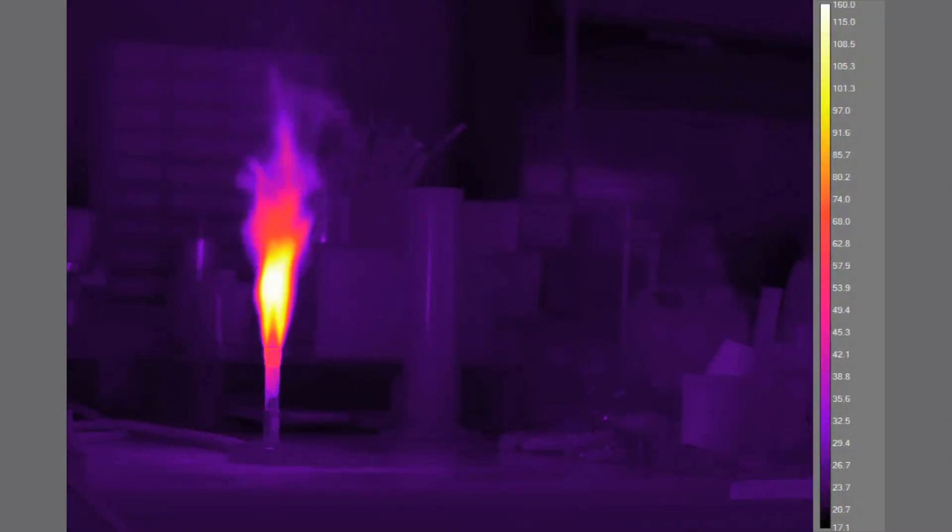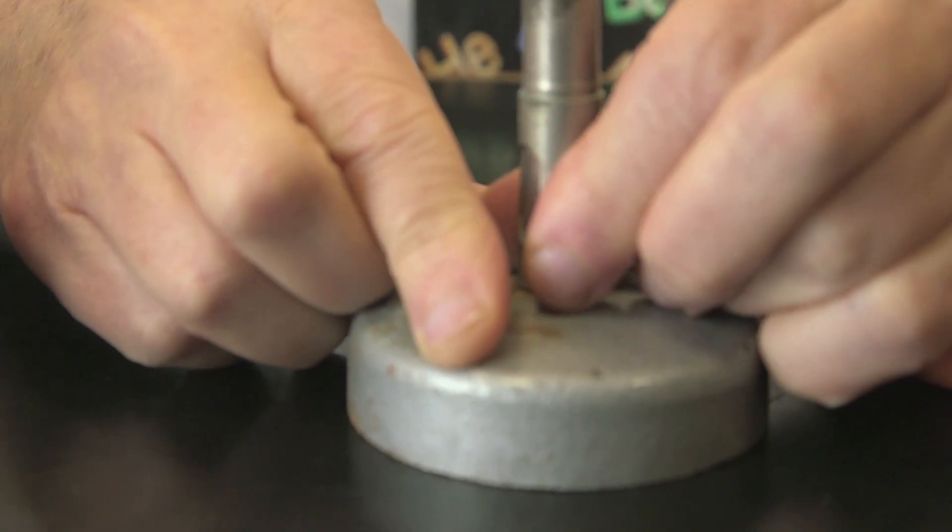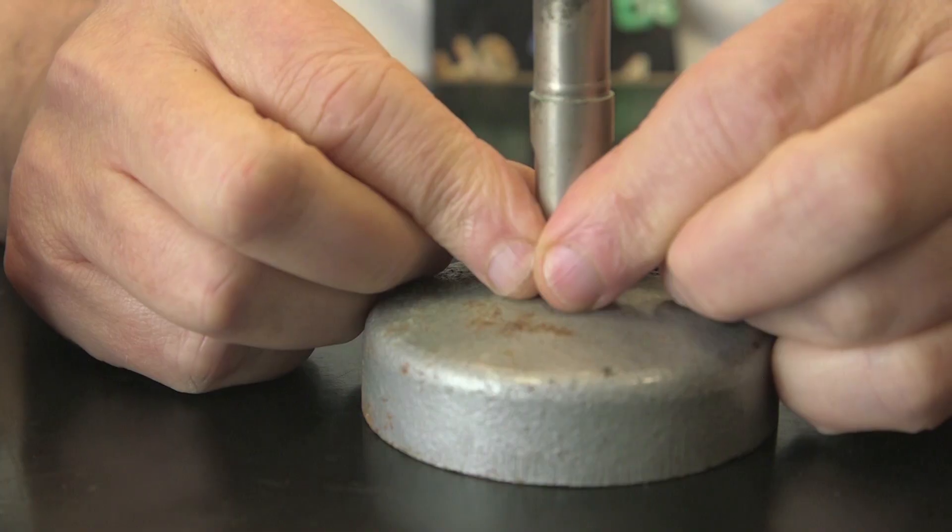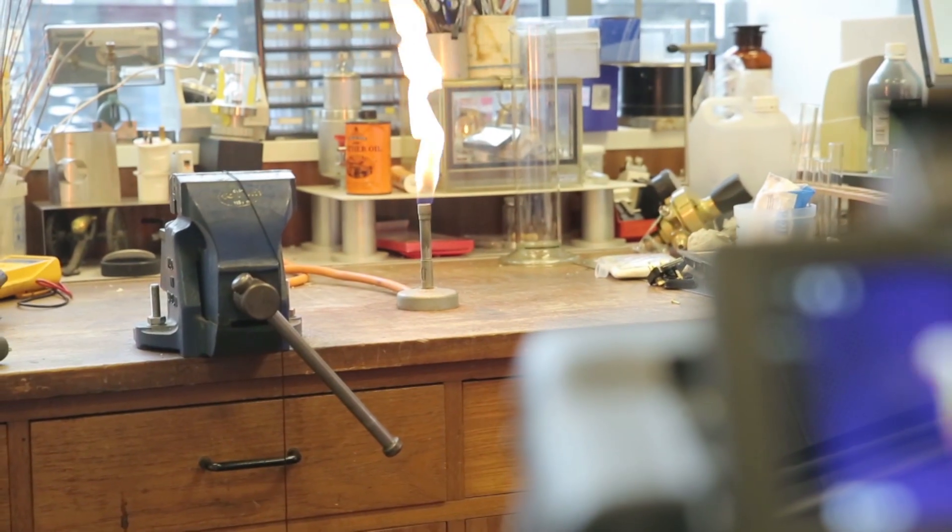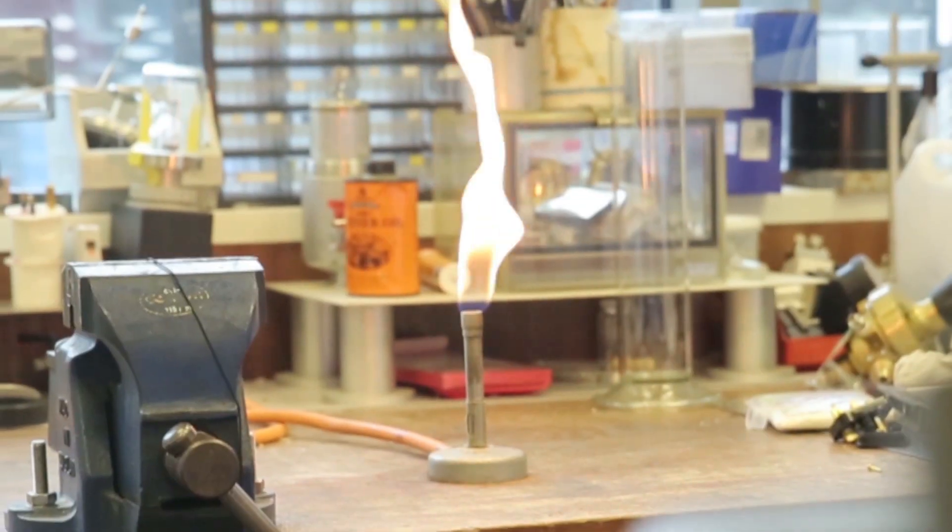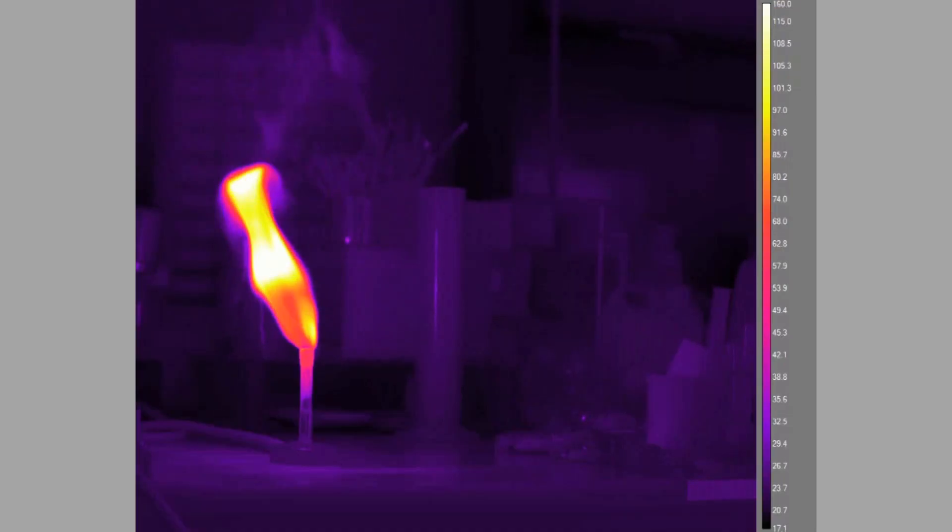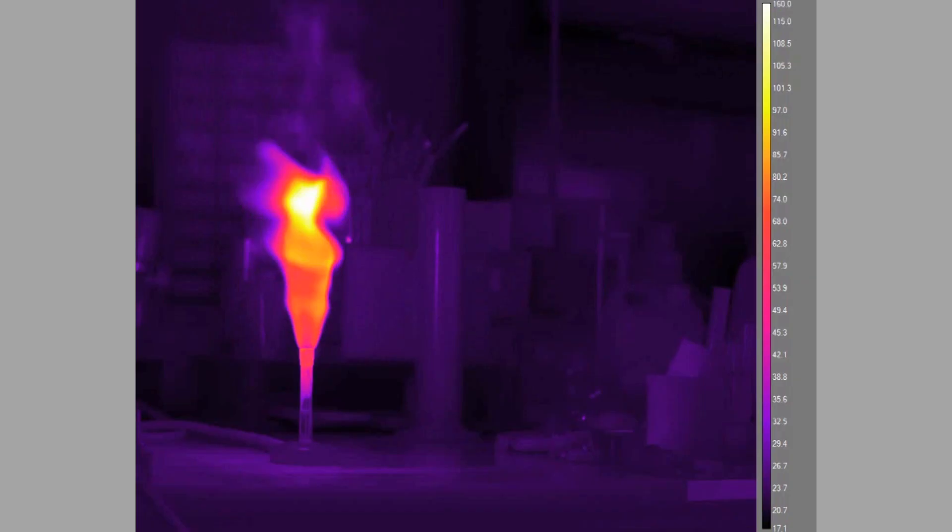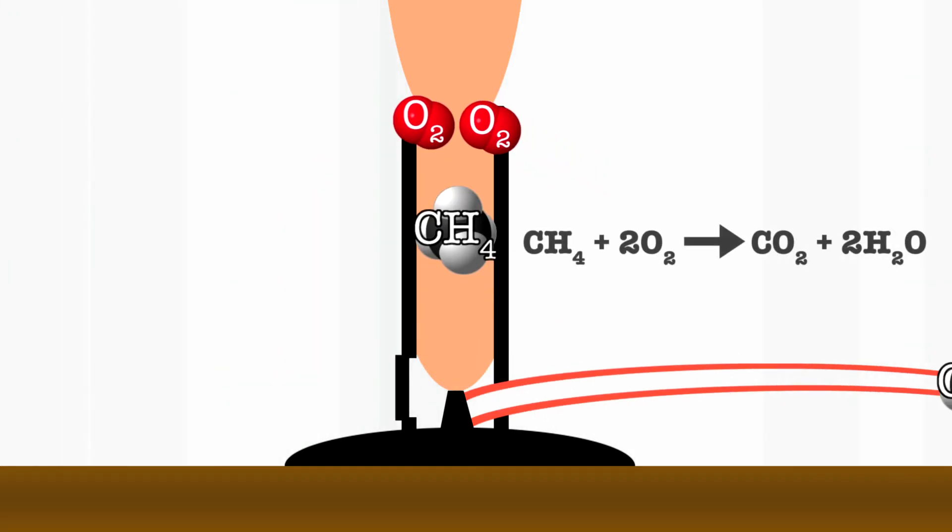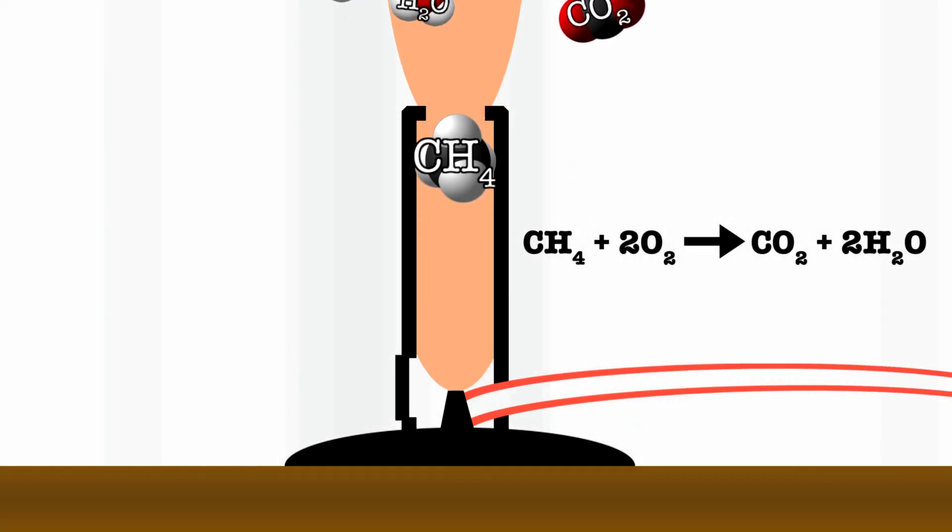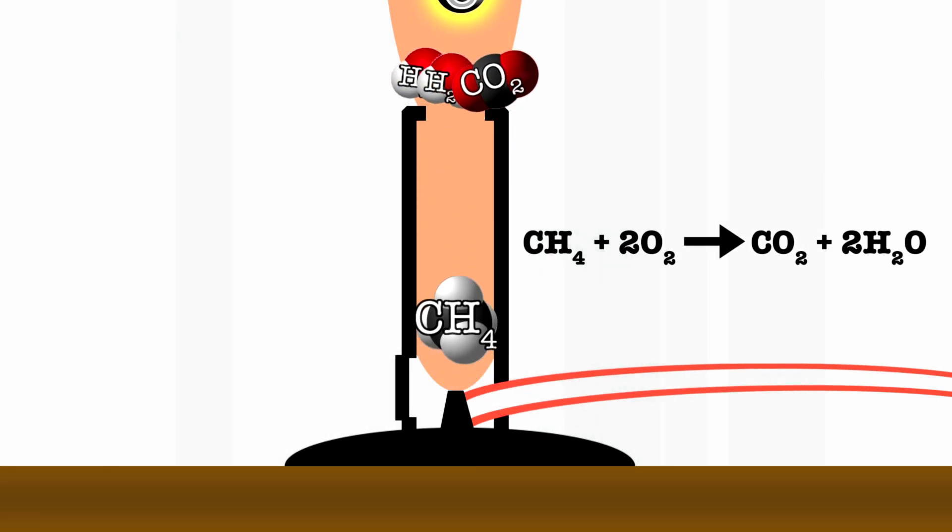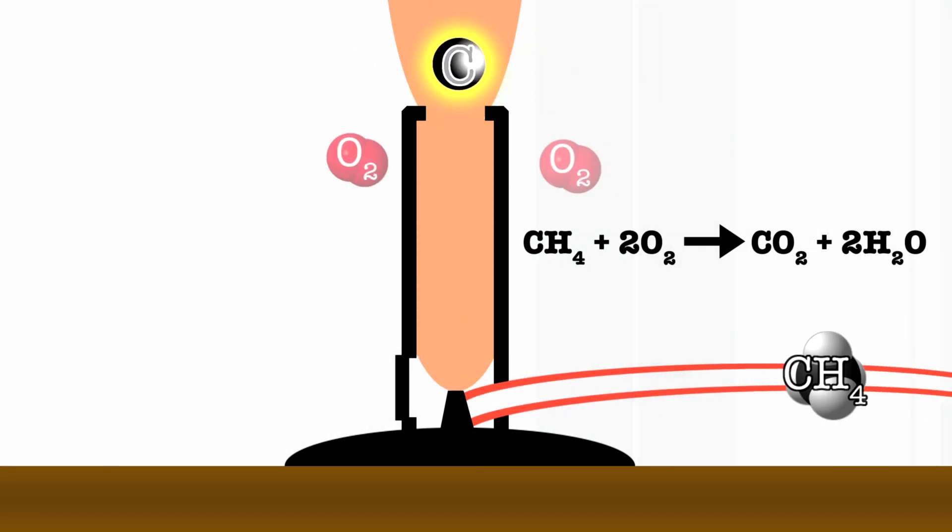So Bunsen burners are usually used in two different modes. There's the mode where the air holes are covered up and you get quite a large yellow wavy flame. The yellow color is from hot carbon particles which are radiating out heat. In the cooler mode, when you haven't got much air, the gas comes up and catches fire when it comes in contact with air. The heat of the flame generates carbon particles from incomplete combustion of the methane, which is in the gas, and eventually those particles burn.